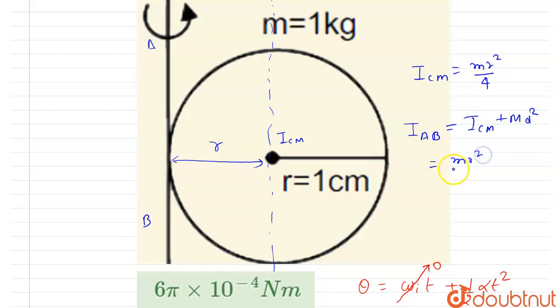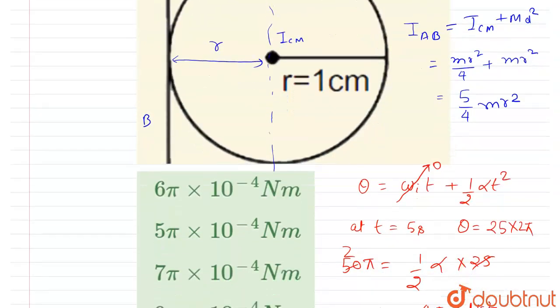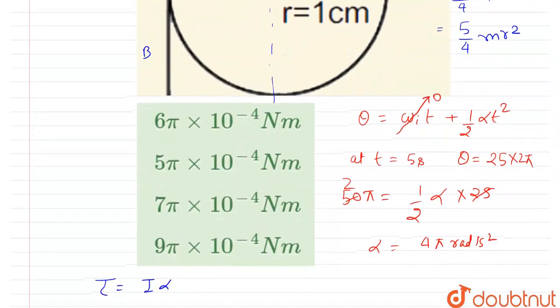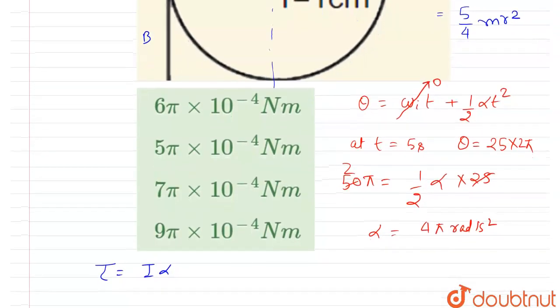I and we have alpha also, right? So we can multiply the two. I is 5 by 4 mr squared, and the alpha is 4π radians per second squared. So this 4 will